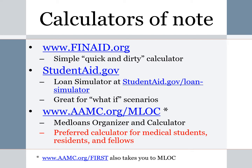These are some calculators of note. Finnaid.org — what I call the simple, quick and dirty calculator — you can easily run some time-driven repayment numbers with this plan. Studentaid.gov, which we have referenced before, has a loan simulator that is terrific for what I call what-if scenarios: what if I'm married filing jointly, what if I'm married filing separately, what is my payment going to be if my income is $100,000 or $200,000? The Medloans Organizer and Calculator from the AAMC is a terrific calculator — the preferred calculator for medical students, residents, and fellows — and we would strongly suggest you use it.